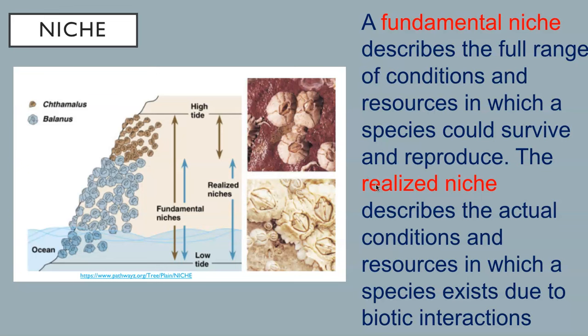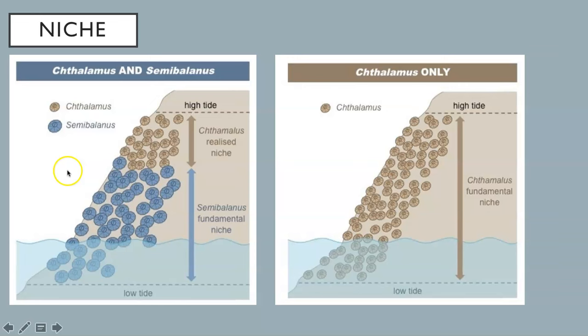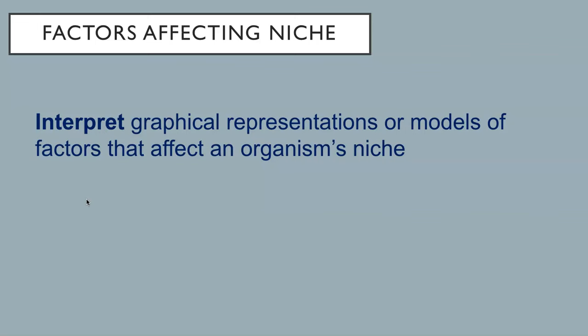Look at this example of barnacles. The Chthamalus, a type of barnacle—the brown ones—can live in the full range of the cliff. However, the Balanus, another type of barnacle, only survives in the lower region of the cliff. Due to competition from the Balanus, the Chthamalus is only found in the upper part of the cliff. This is the realized niche of this species of barnacle, while the realized niche and the fundamental niche are the same for the Balanus. If the Balanus were removed from the cliff, the Chthamalus would migrate and cover the entire area to fill its fundamental niche. You need to be able to interpret graphical representations or models of factors that affect an organism's niche.